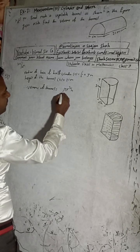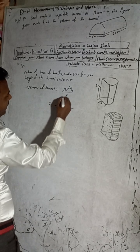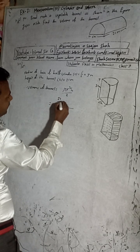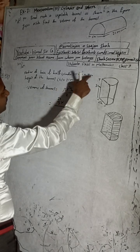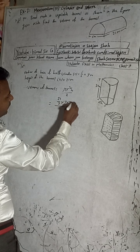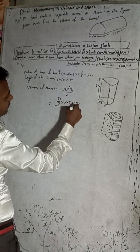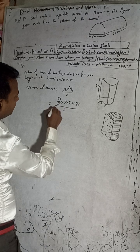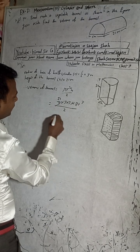So volume equals π times r², divided by 2. Pi value equals 22 by 7. r is given here 3, so 3 into 3, and height is given 21. Divided by 2, so this is 7, 3 is 21.